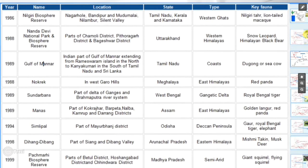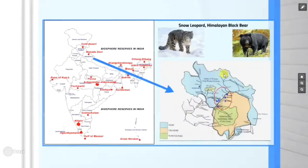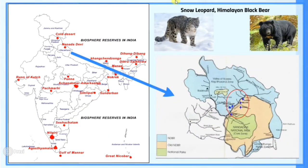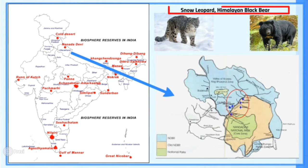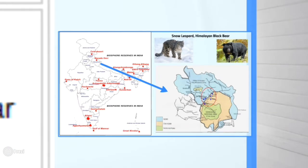Next is Nanda Devi National Park and Biosphere Reserve. It is located in Uttarakhand, in the Western Himalayas. Its main key fauna are Snow Leopard and Black Bear.